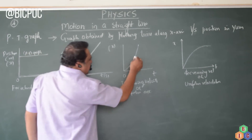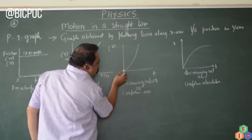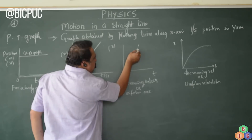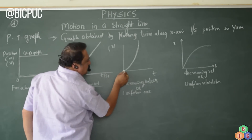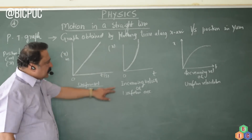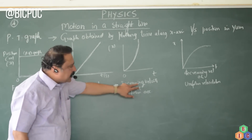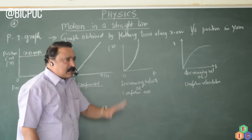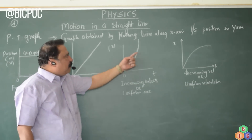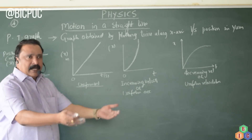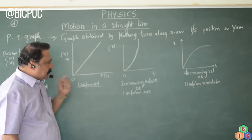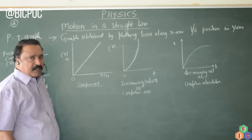Now if a body moves with increasing velocity, the velocity of the particle is increasing. This is the PT graph of a particle moving with increasing velocity with respect to time, or it is moving with uniform acceleration. If the body moves with uniform increased velocity, then it is under uniform acceleration.